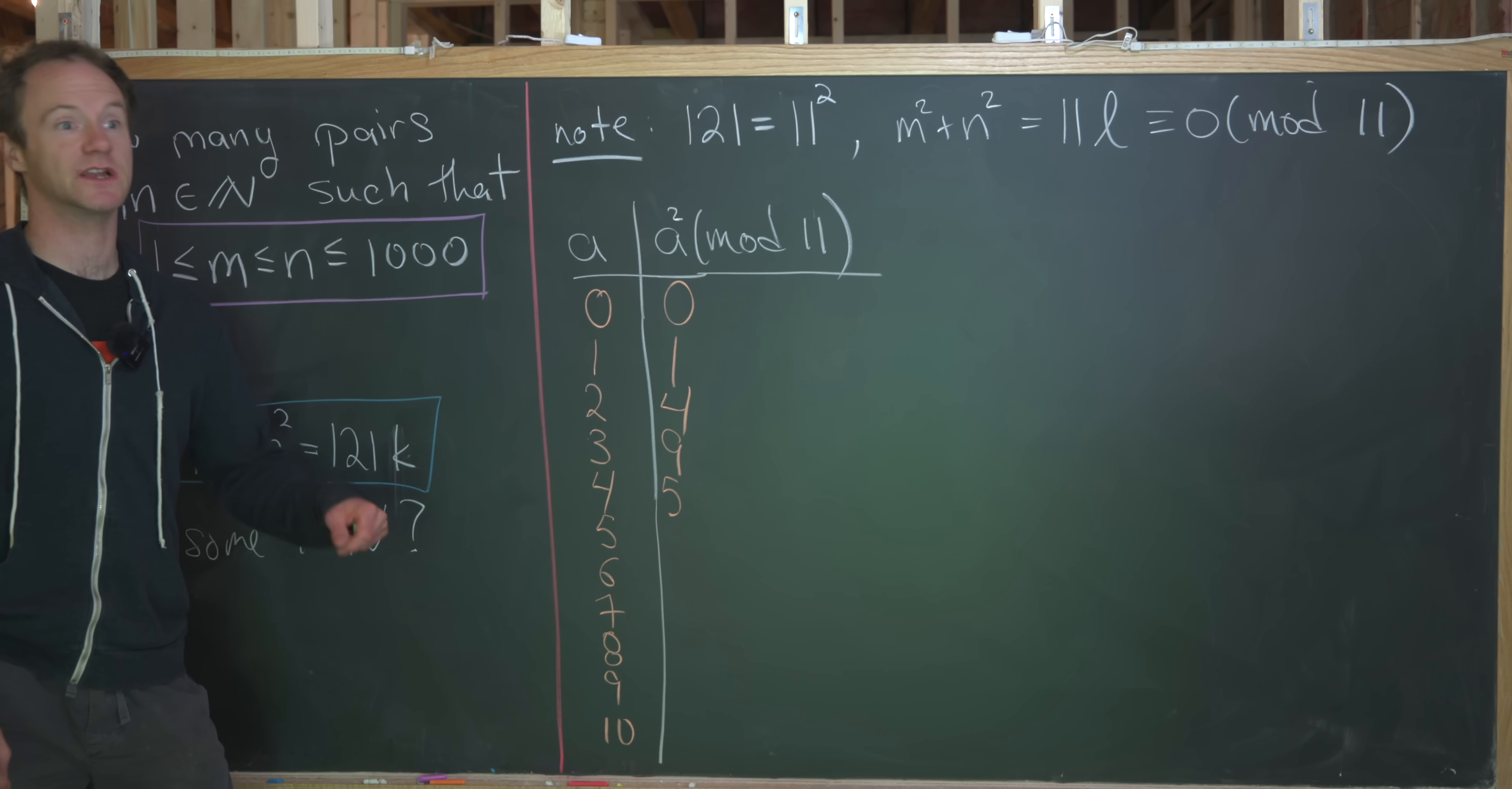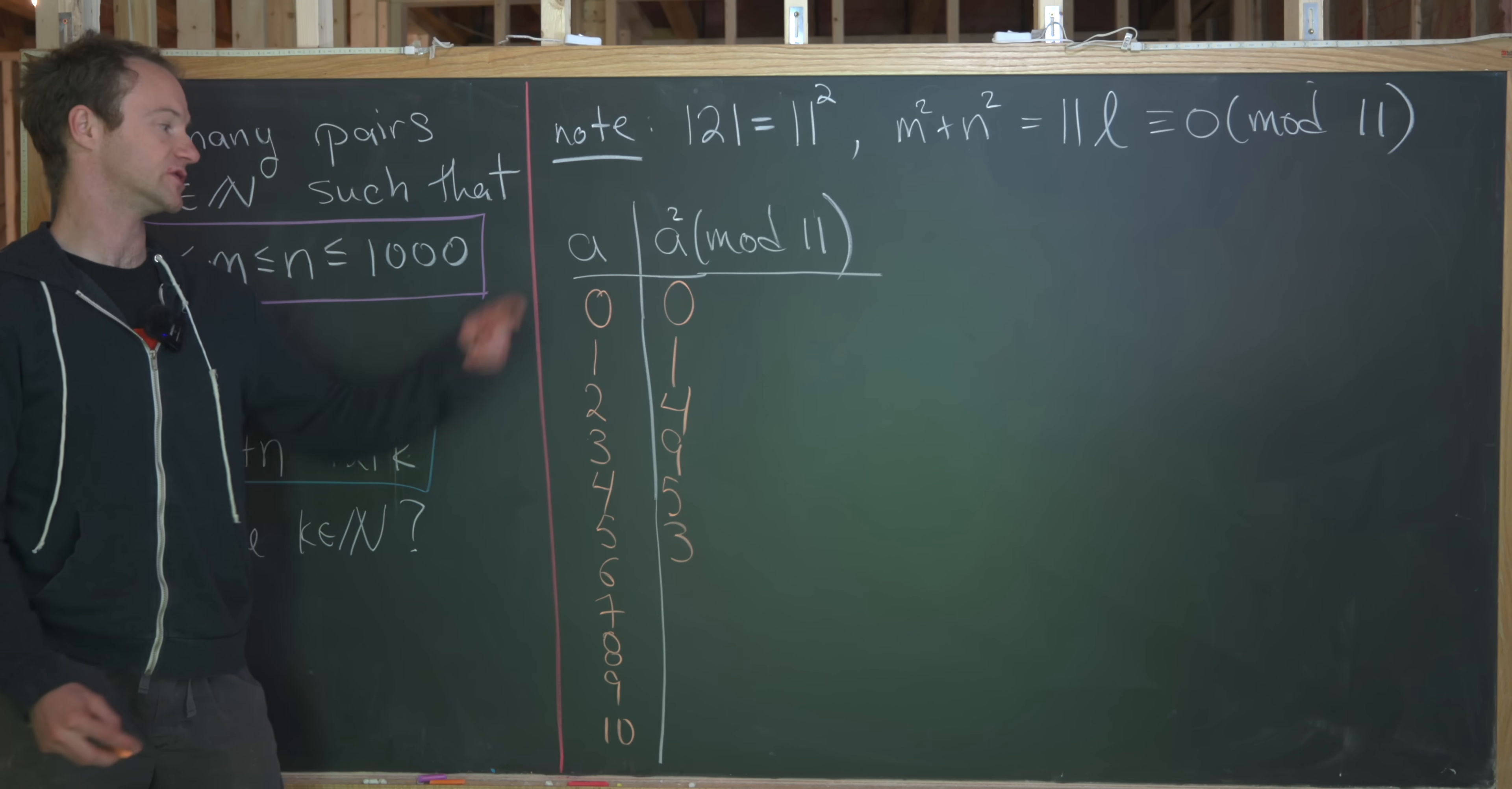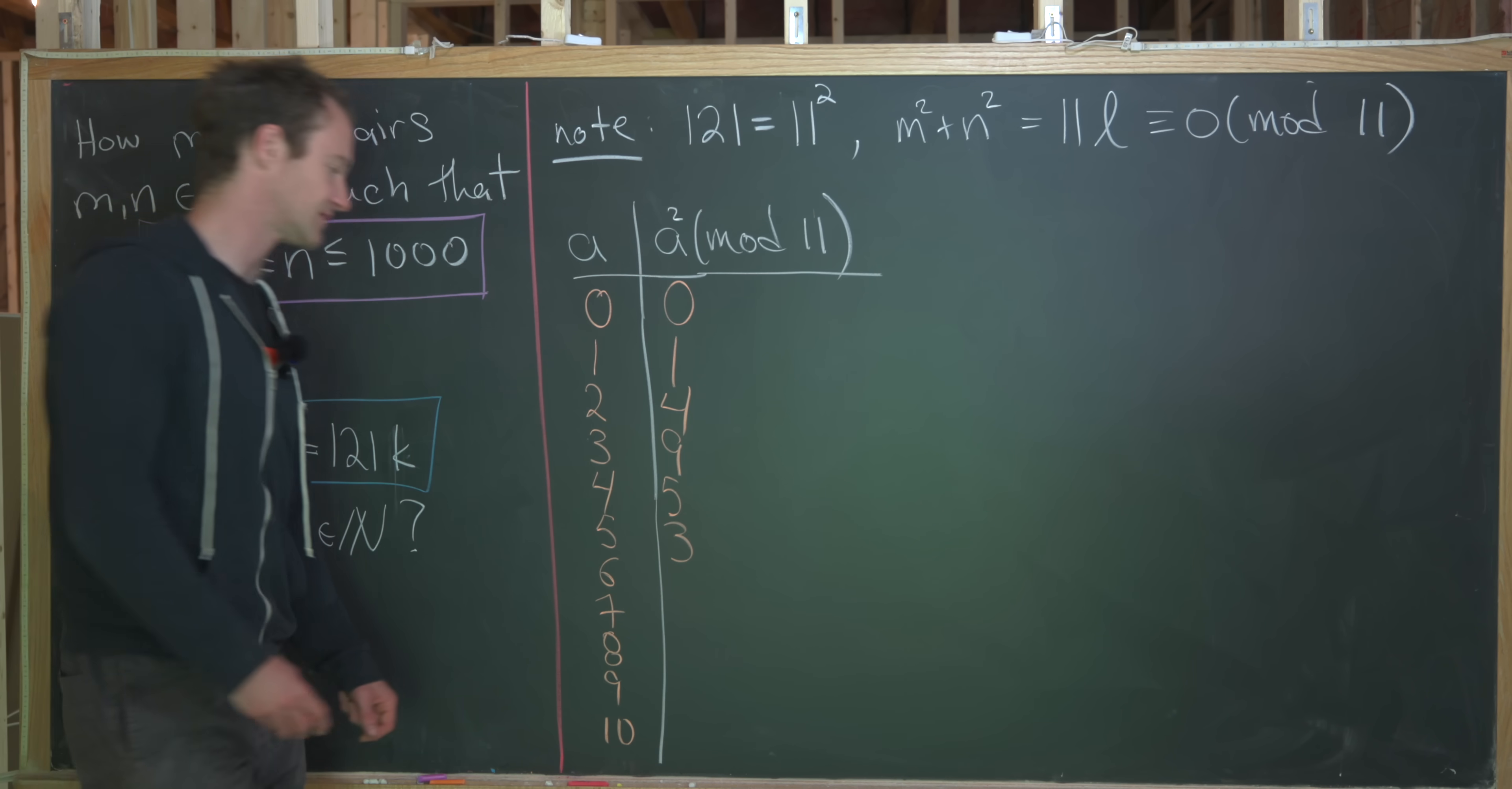If we square 5, we'll get 25. But reducing that mod 11, we'll get 3. Because 25 is 3 more than 22, which is a multiple of 11. Then if we square 6, we'll get 36. But that's 3 more than 33, which is a multiple of 11. So we get 3 here.